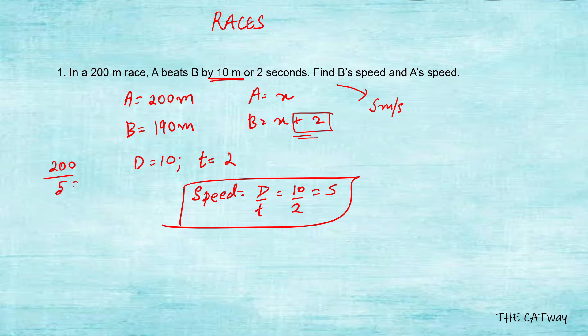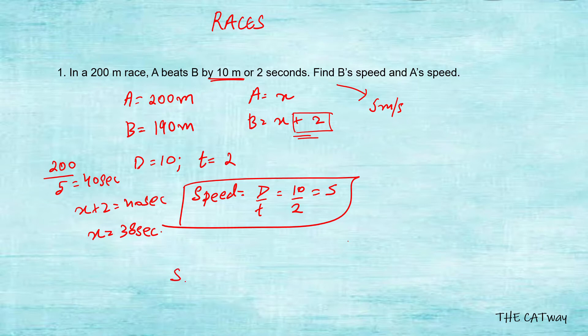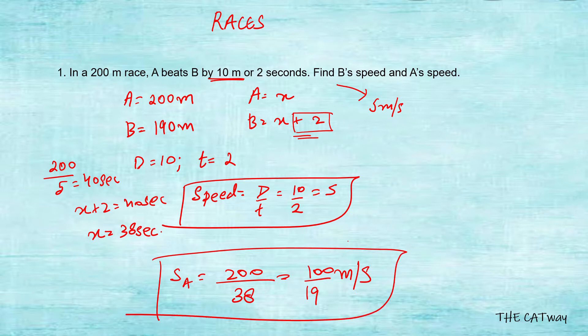Since x plus 2 equals 40 seconds, x equals 38 seconds — meaning A completed the race in 38 seconds. So the speed of A is distance divided by time, which is 200 divided by 38, that is 100 divided by 19 meters per second. With this, question one is complete.